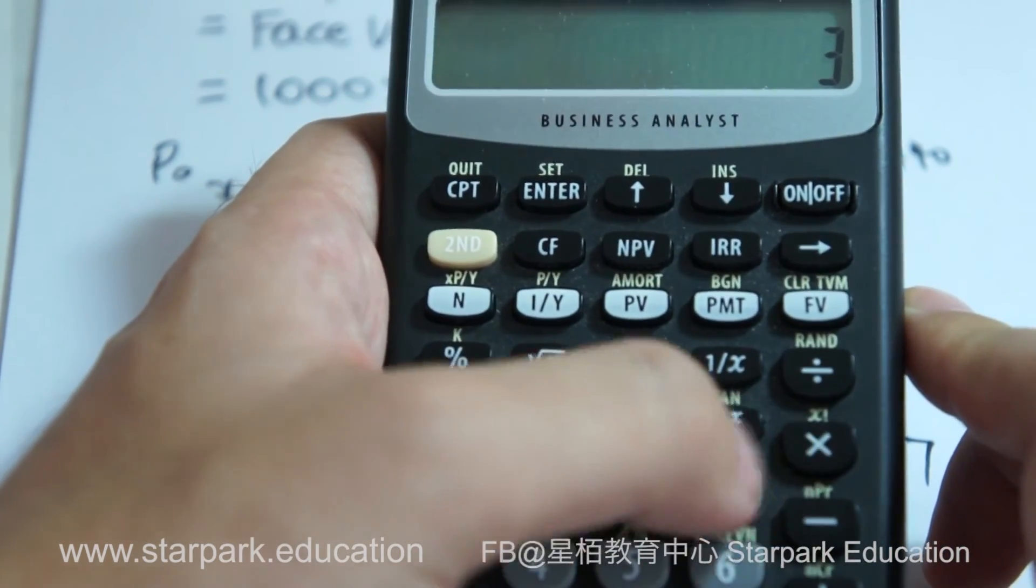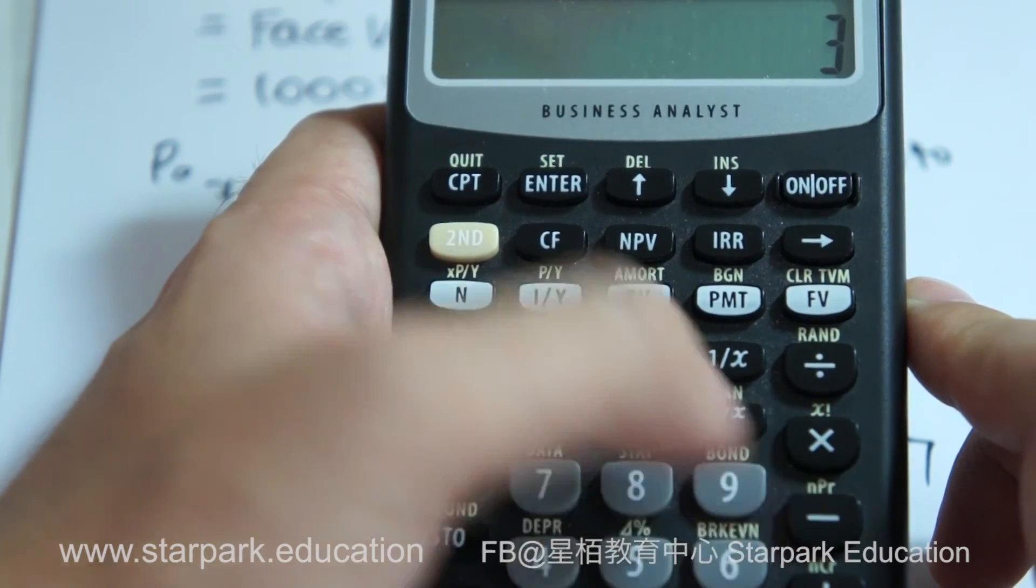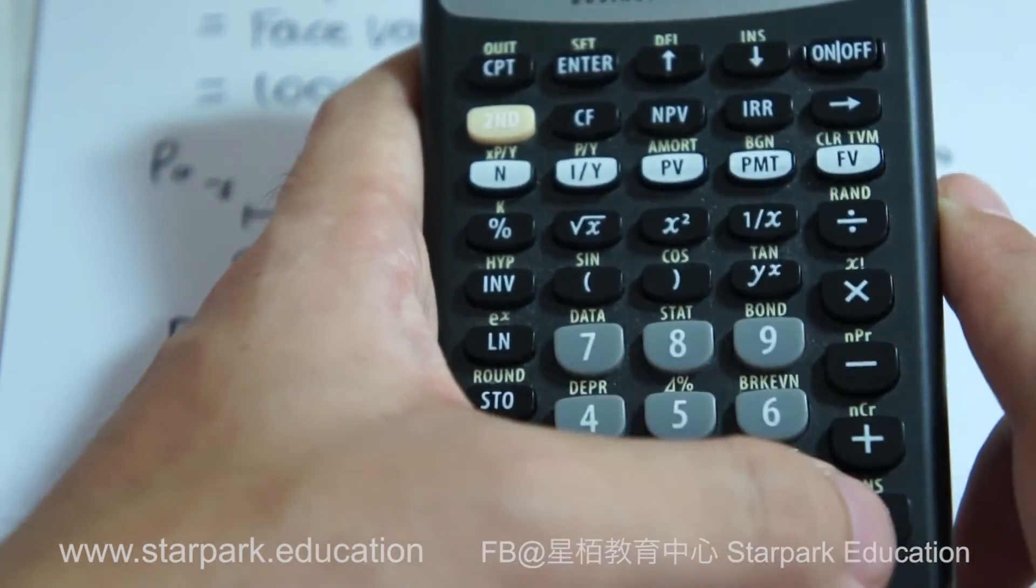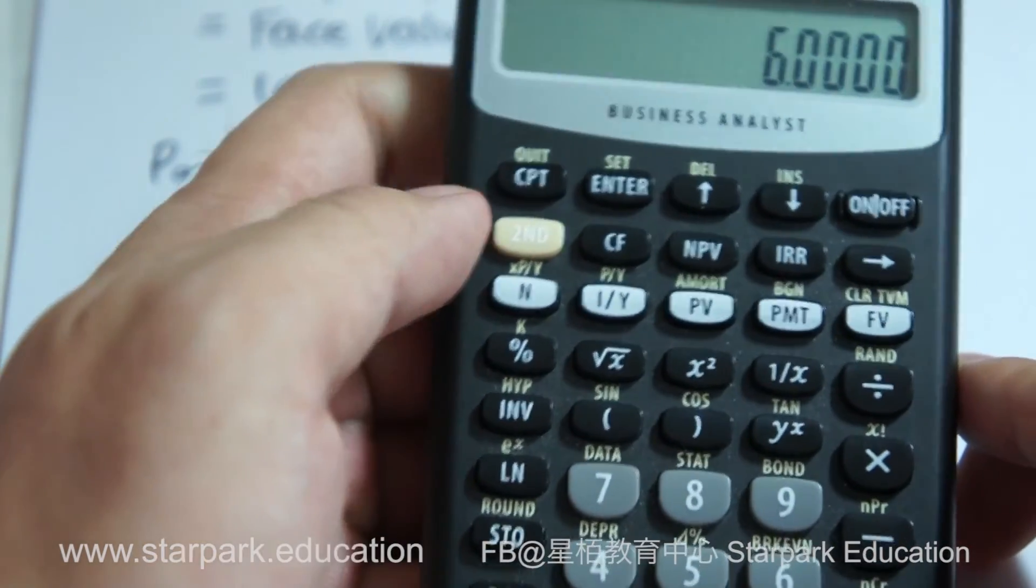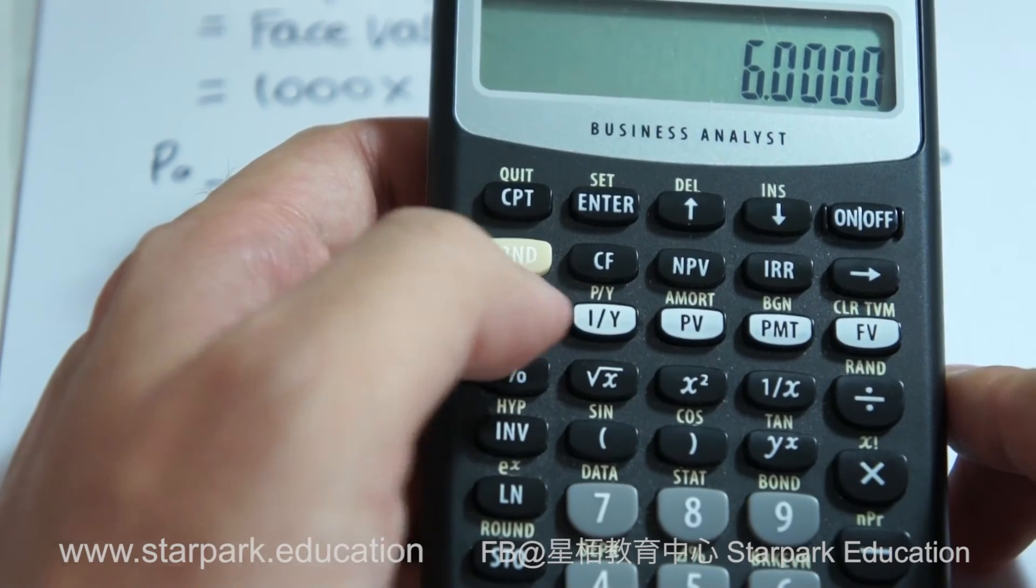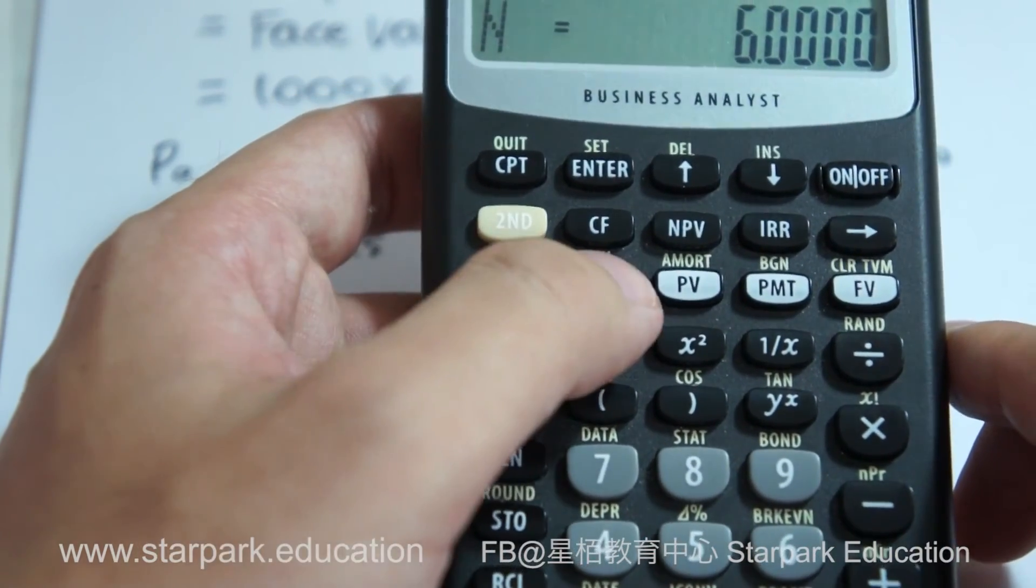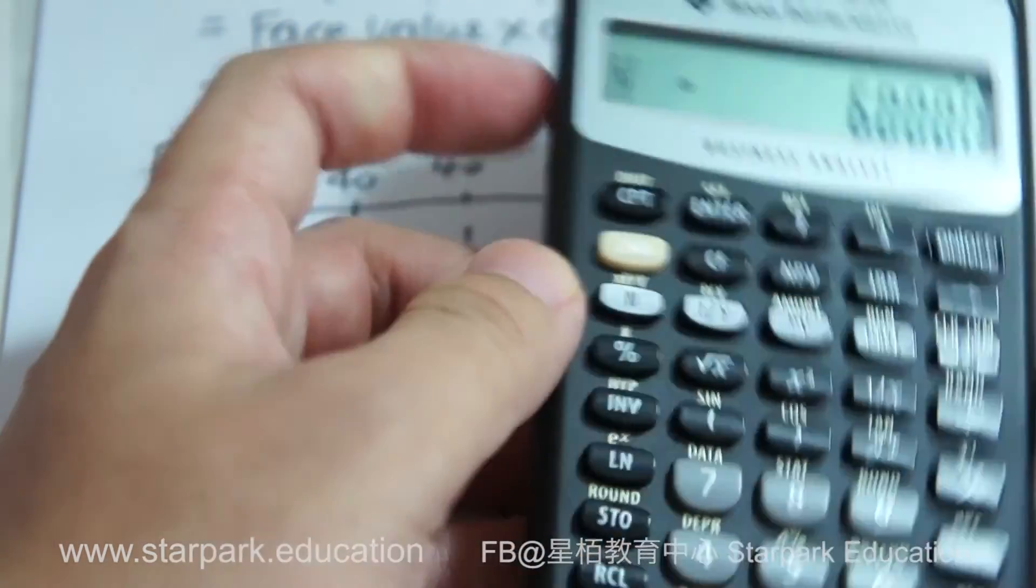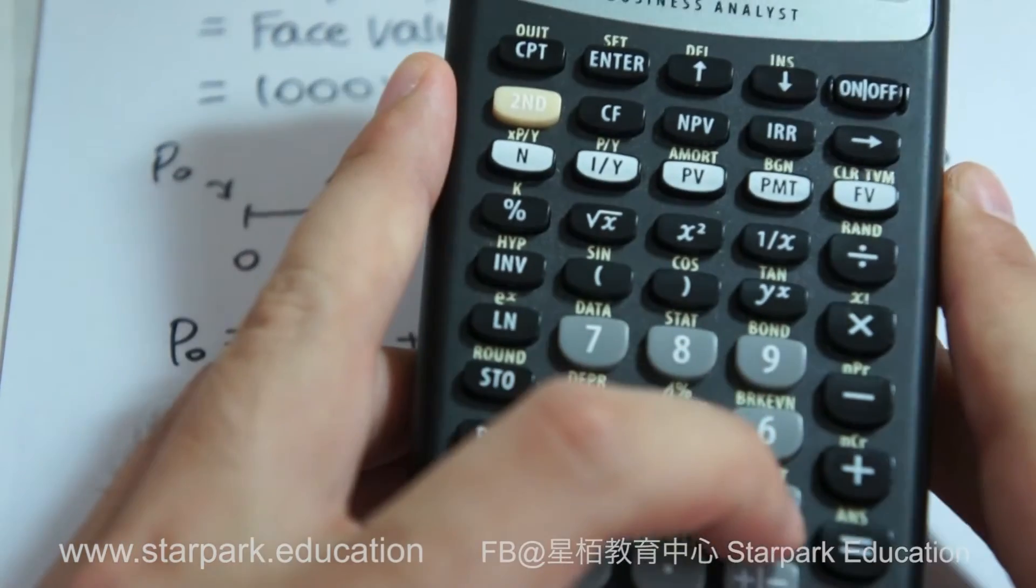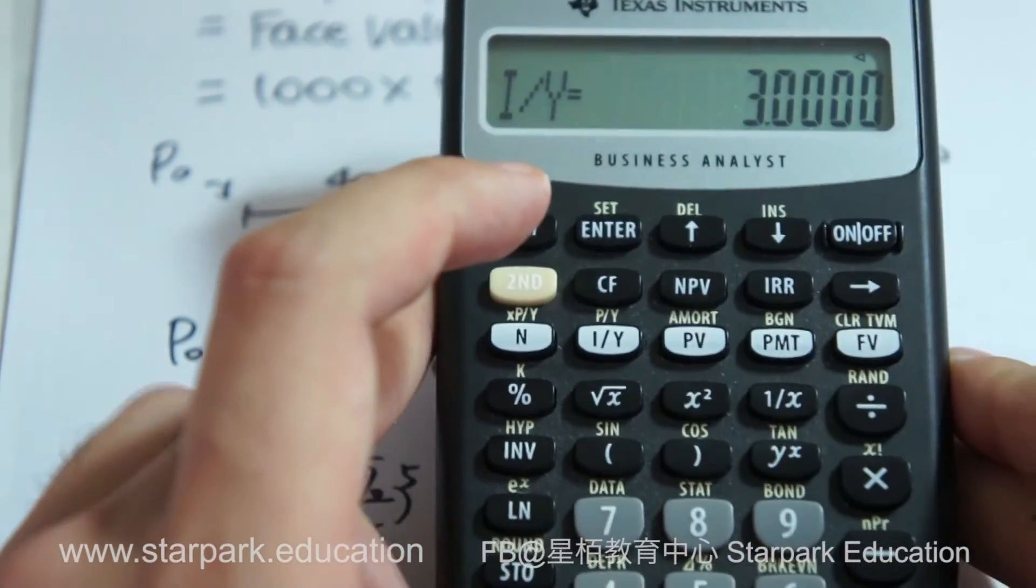The second data you have to receive is 6, because of 3 years. We can input 3 firstly, but 3 years we have to receive the coupon twice per year, so we need to multiply by 2, which equals 6. So 6 is the number of periods you receive, so you input N here. The third data is the I stroke Y, which is 3%. So you have to input 3, and then input the I stroke Y.